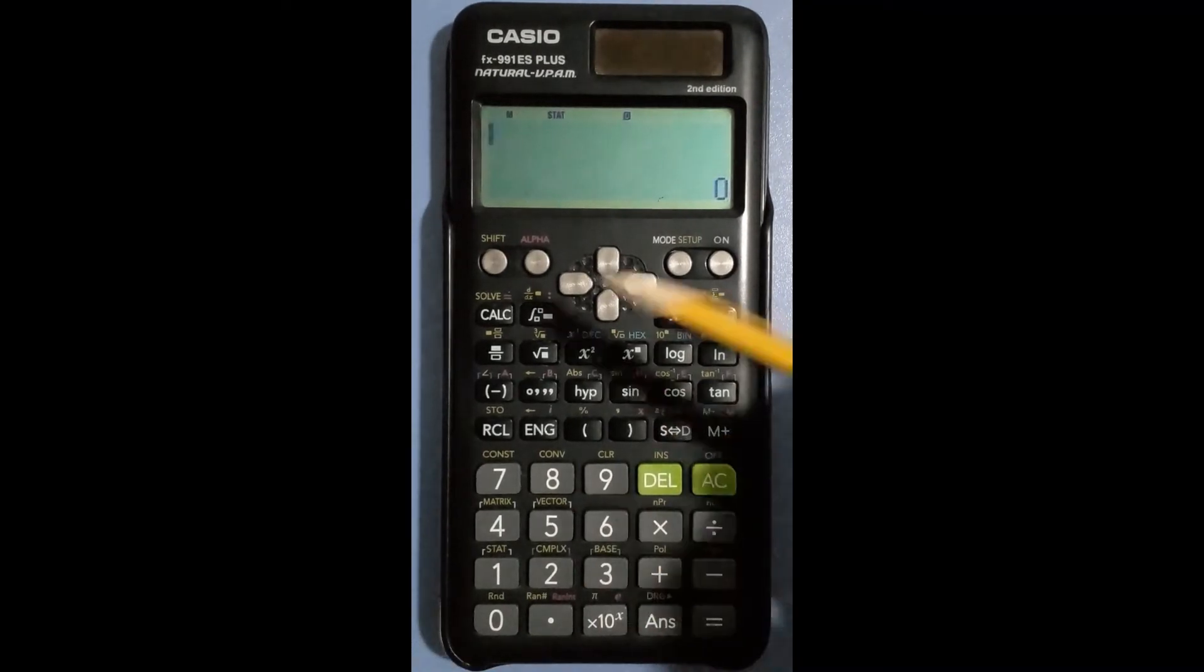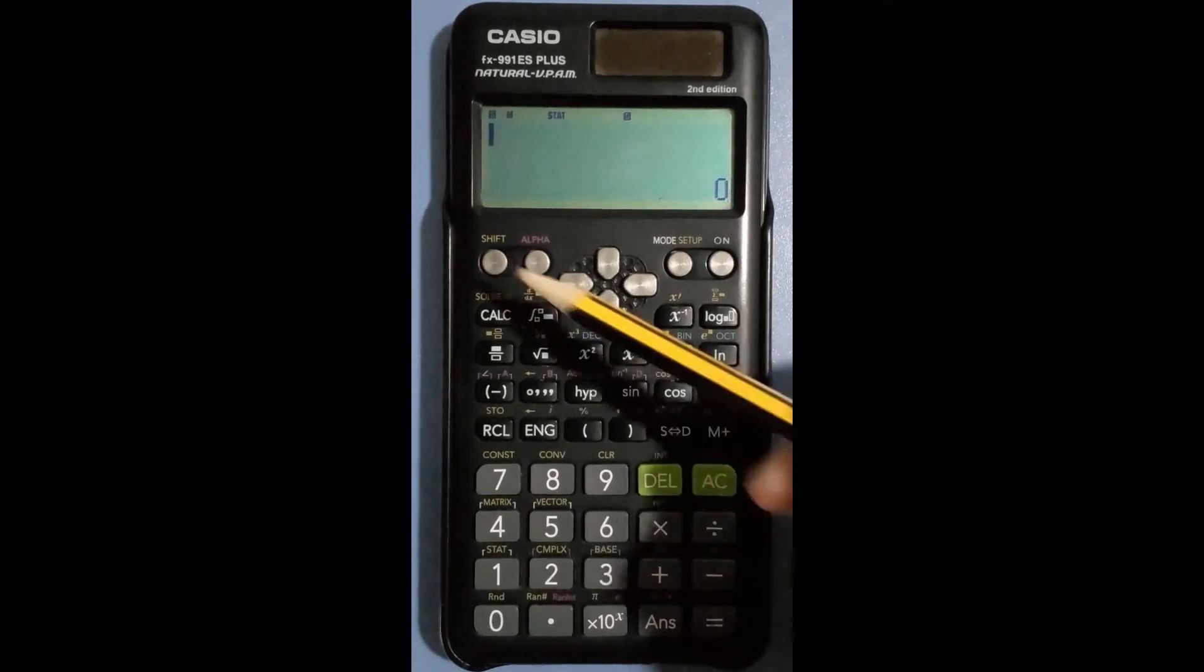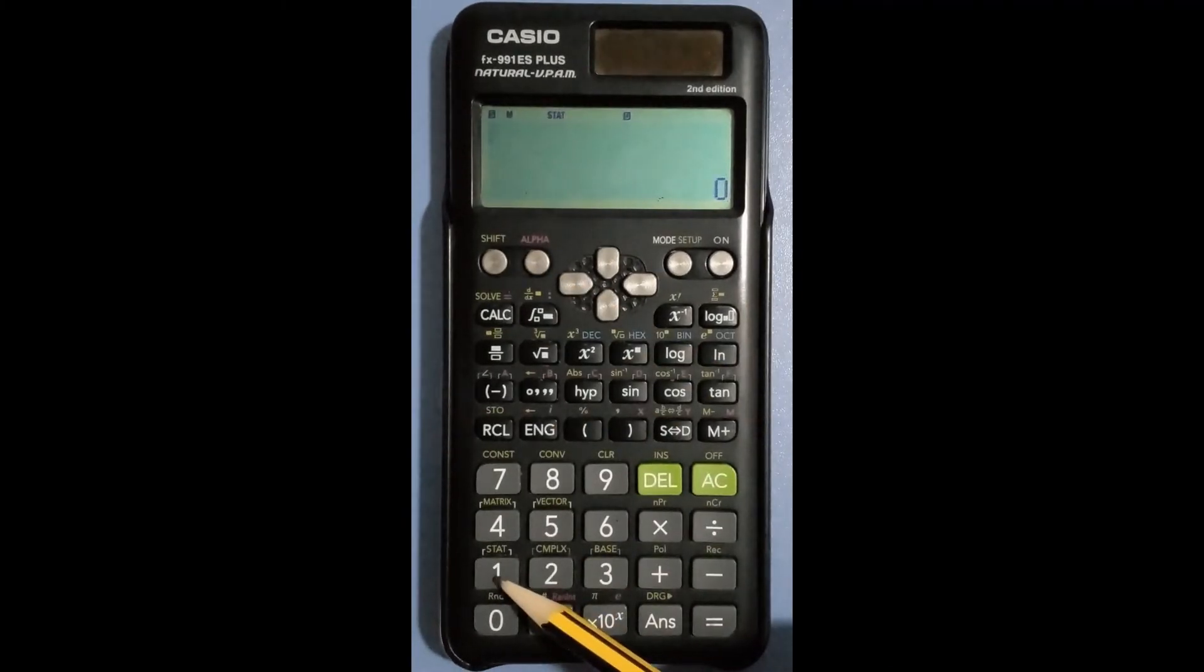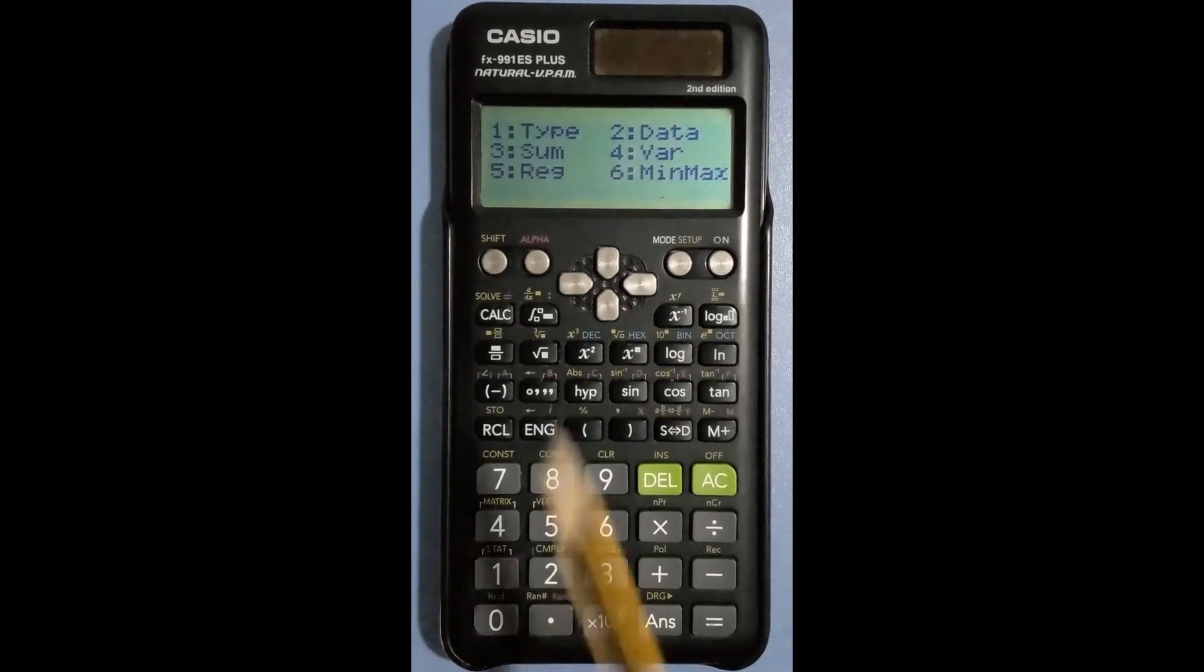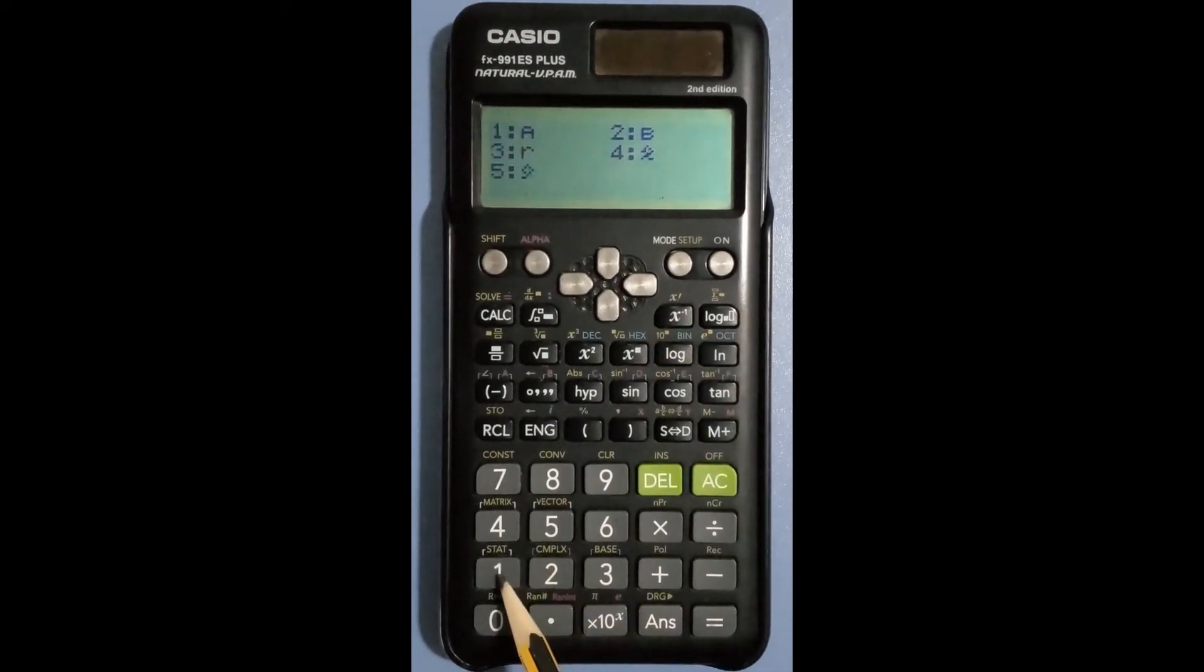To find the values of A and B, press shift then 1 to view this menu. The regression is number 5, so hit the 5 button. To obtain the a value, press 1 then equal. Of course, we got the same value of 45.47.